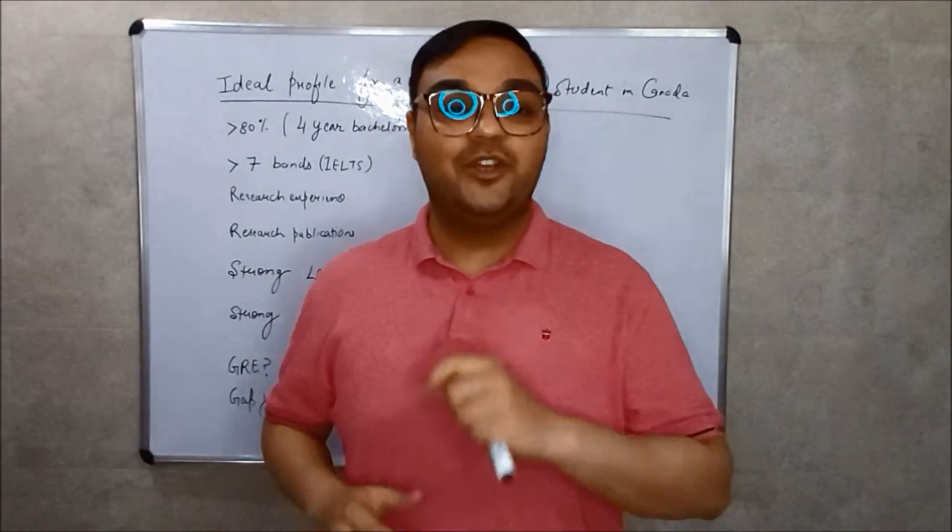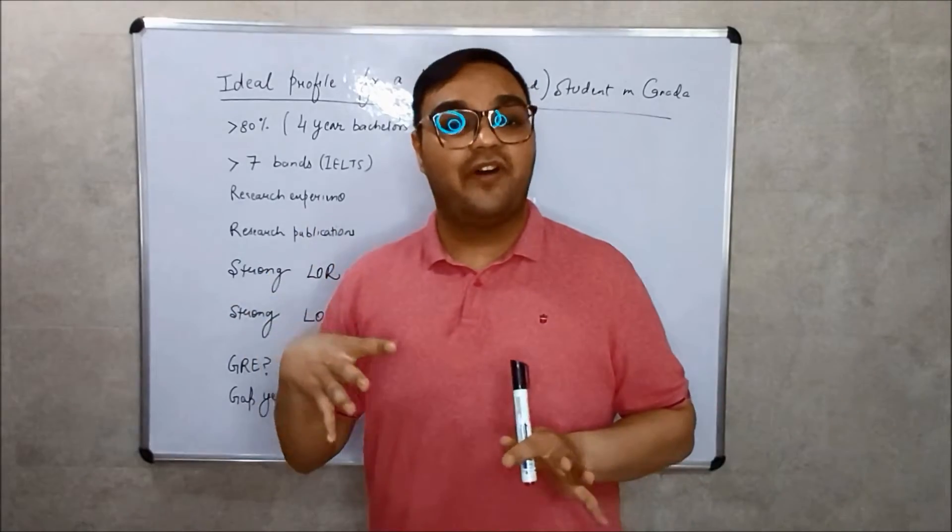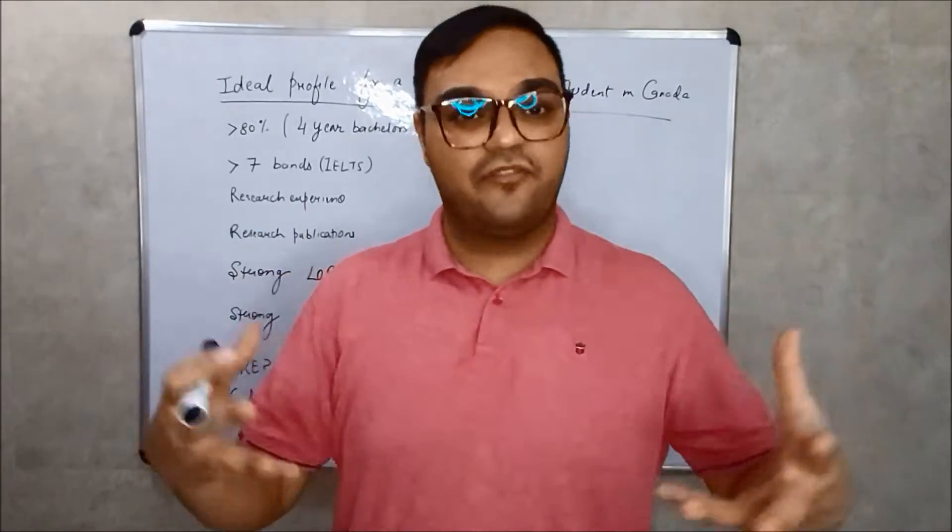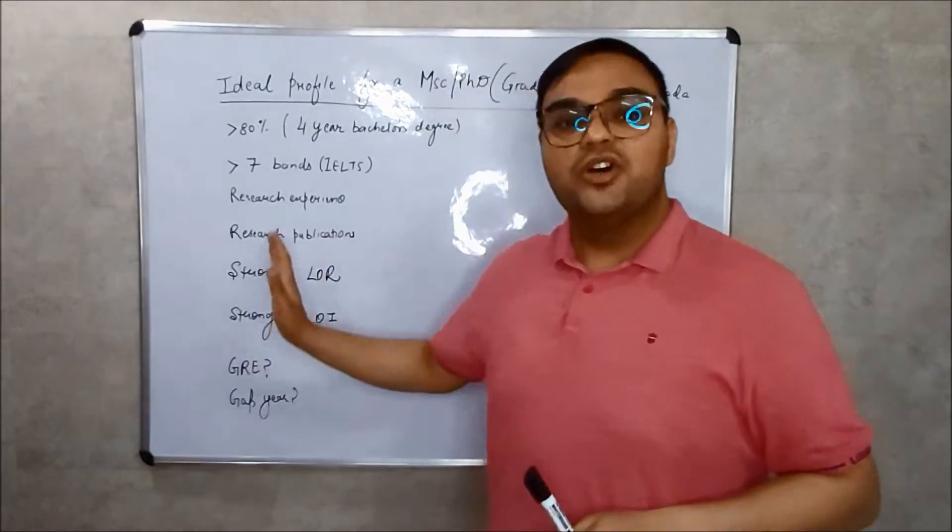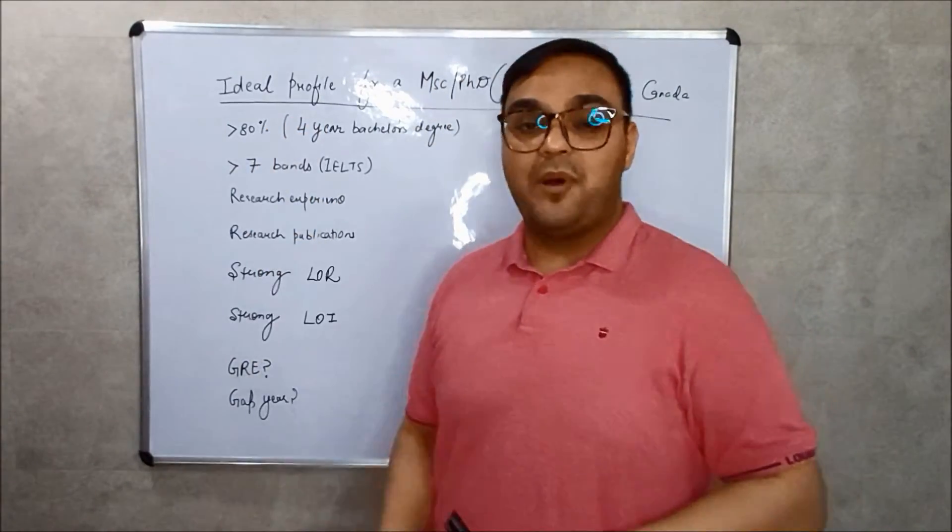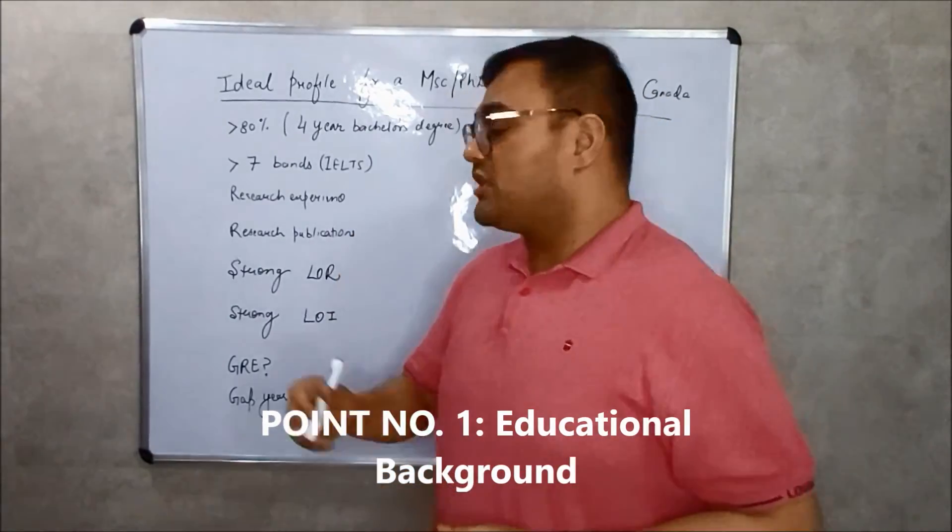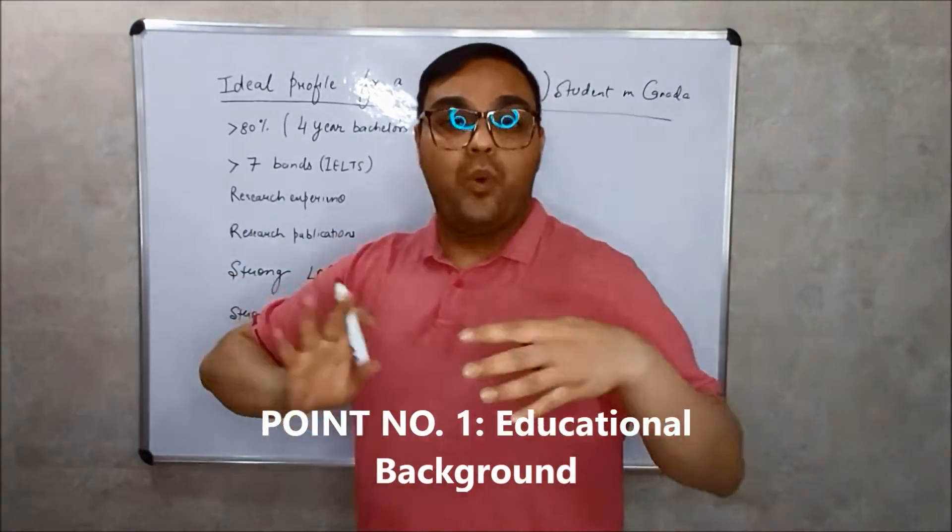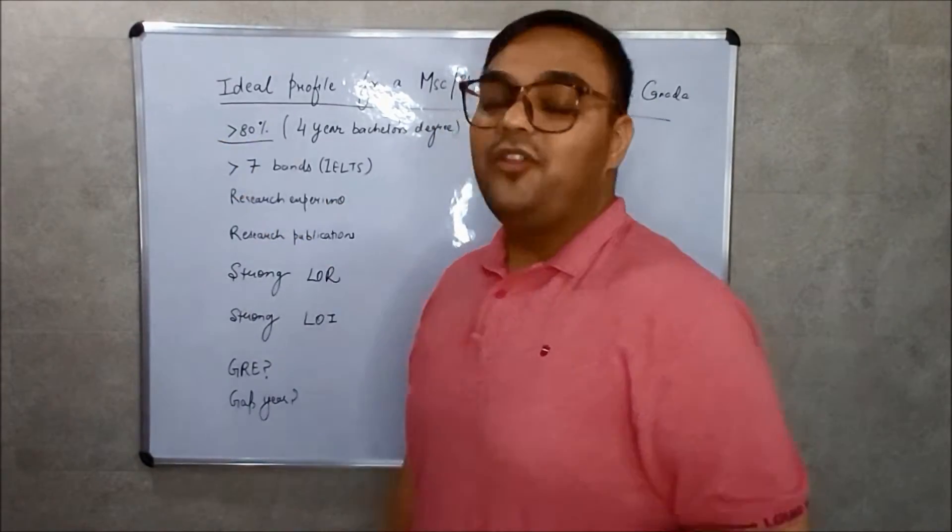Let's begin with video number one. In this video, we will be discussing the ideal profile which any professor would love to have in a student. In most cases, this never happens, so we are discussing an ideal situation. Number one: the percentage score. Usually, universities want to have students which have more than 80% aggregate.